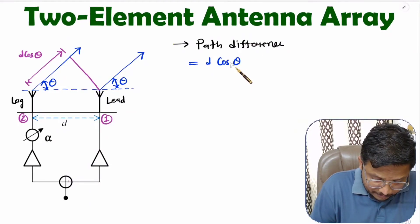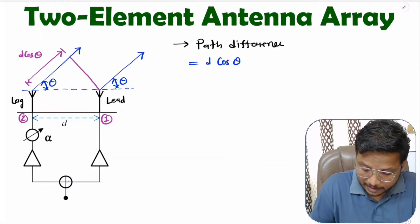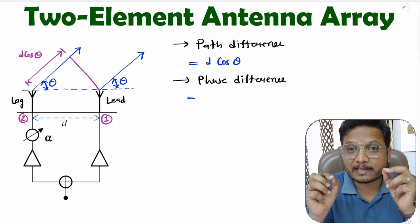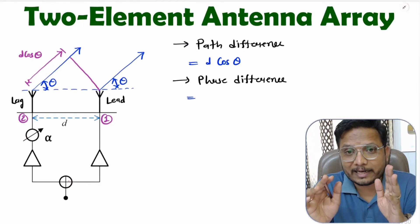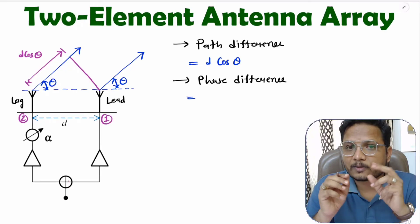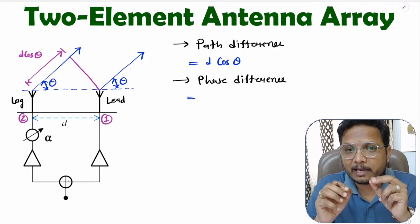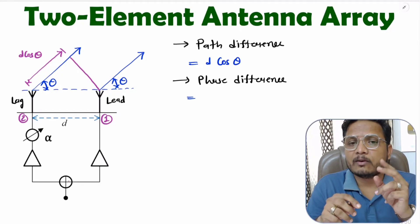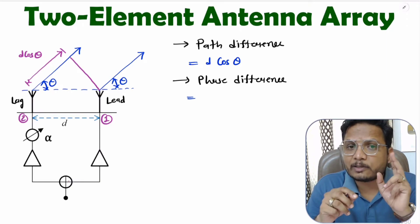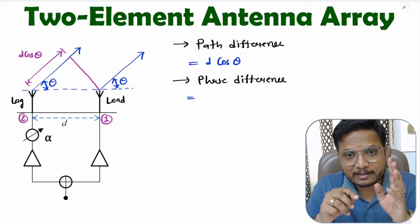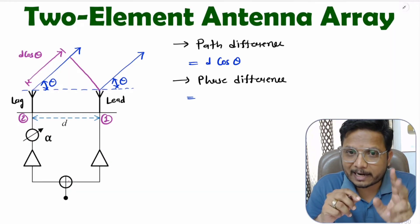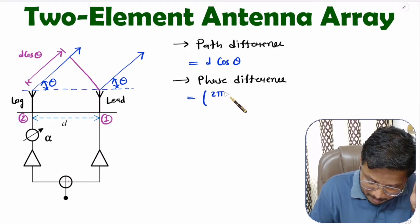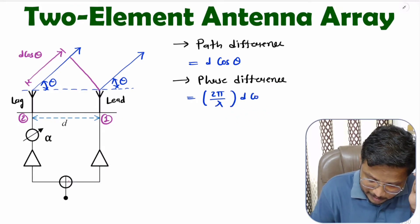Based on path difference, we can identify phase difference. For lambda distance, phase difference is 2π. So for D cos theta distance, phase difference will be 2π/λ into D cos theta. So phase difference here is 2π/λ into D cos theta.